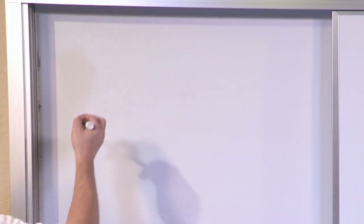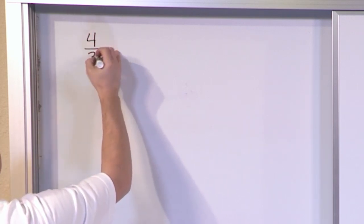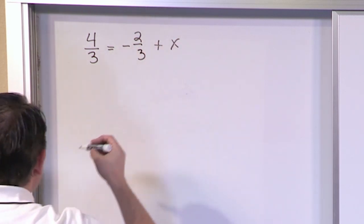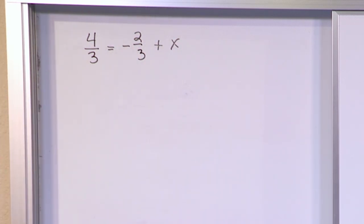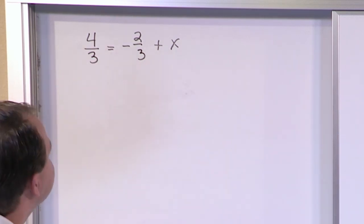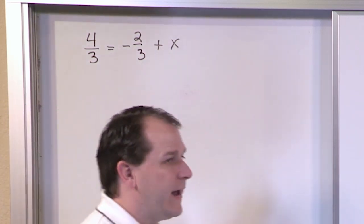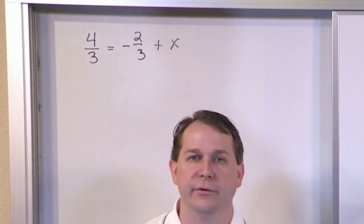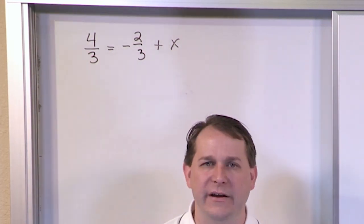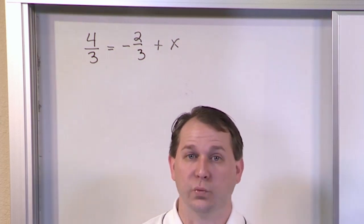All right, so let's crank up the complexity just a little bit. What if we have 4 thirds is equal to negative 2 thirds plus x? Notice there's a couple differences here. The first one is I have fractions in here, which scares off a lot of people. The second one is x is on the right-hand side. It doesn't matter where x is. All you're trying to do is get x on one side of the equal sign. It doesn't matter where it is. You just want to get it by itself. So you want to do this using the rules that we're learning here.